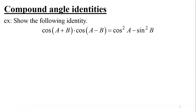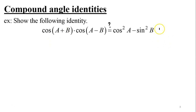In the next example, we prove the identity that the product of cosine of a plus b and cosine of a minus b equals cosine squared a minus sine squared b. When proving an identity, we start from one side and reach the other, or show both sides equal the same quantity. Since the right-hand side offers little to work with, we start from the left-hand side.